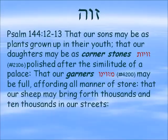Verse 13: 'That our garners, Msvenu — Strong's number 4200 — may be full, affording all manner of store, that our sheep may bring forth thousands and tens of thousands in our streets.' The garner is a place where the grain is being stored and so it covers the grain.